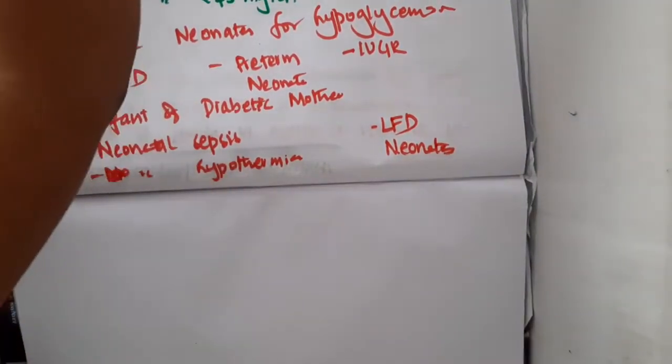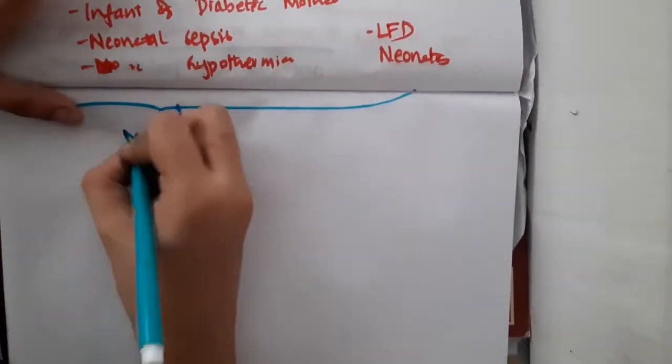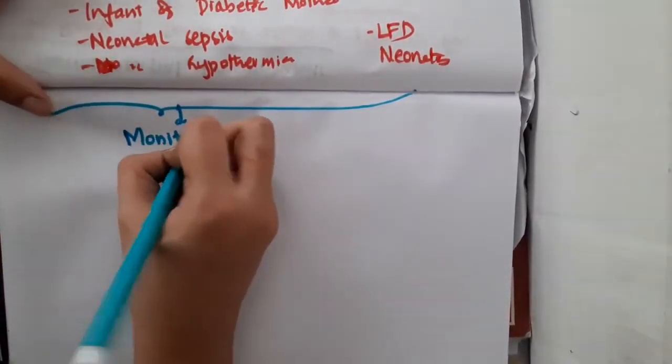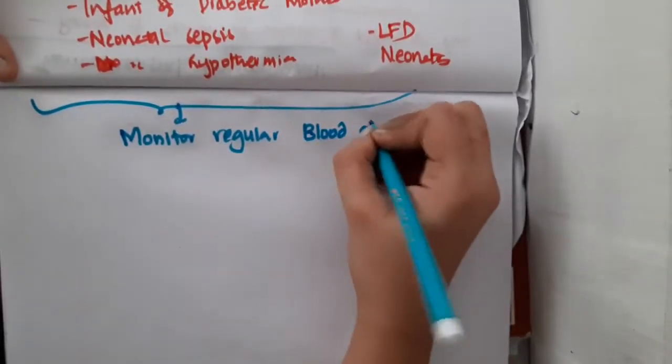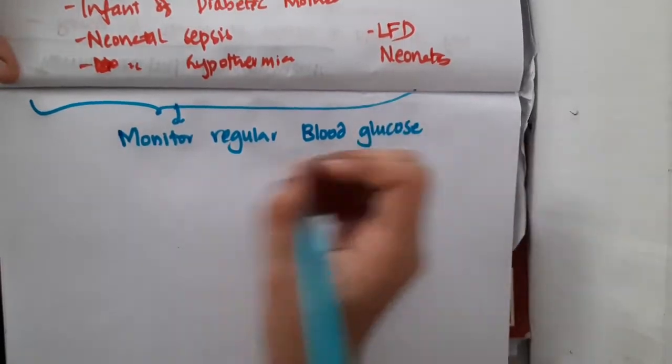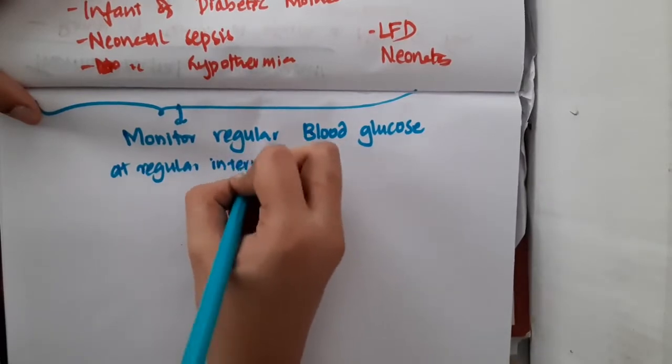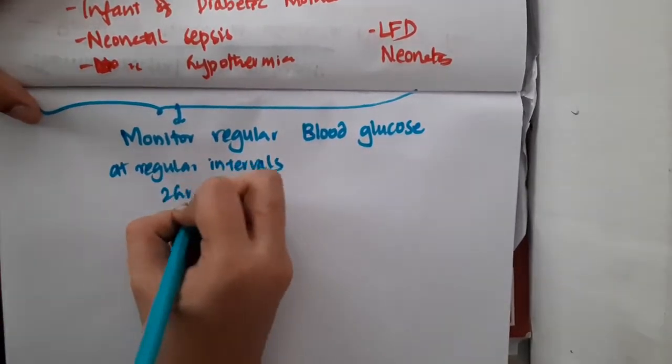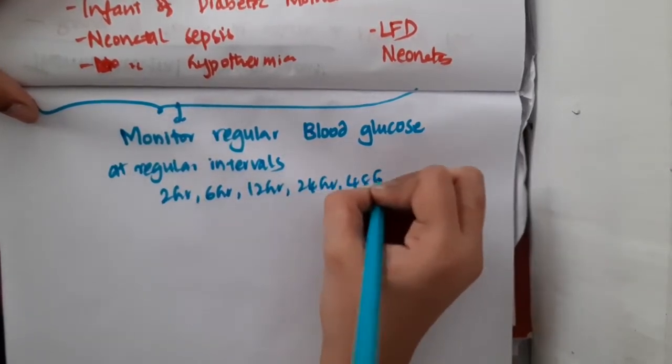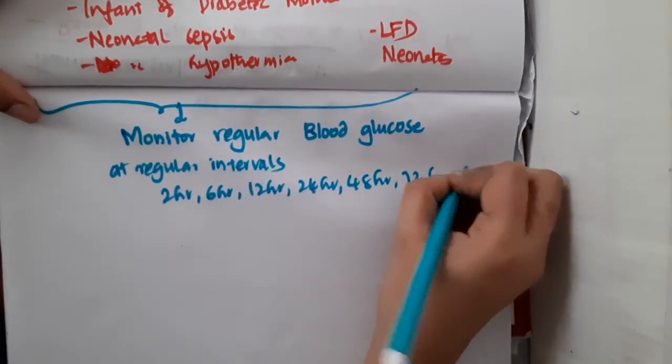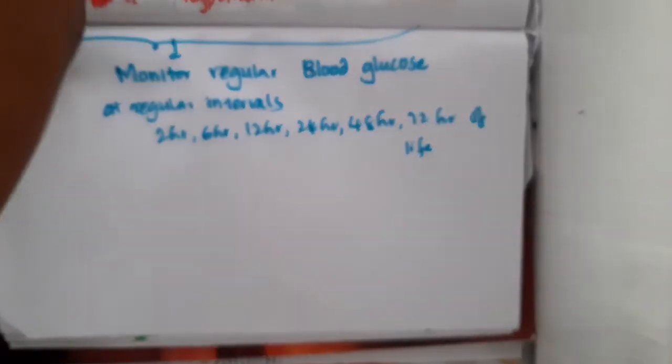For all these high-risk infants, we should monitor regular blood glucose monitoring. Blood glucose should be monitored regularly at regular intervals, that is at 2 hours, 6 hours, 12 hours, 24 hours, 48 hours, and 72 hours of life. We will have to monitor regular blood glucose levels.